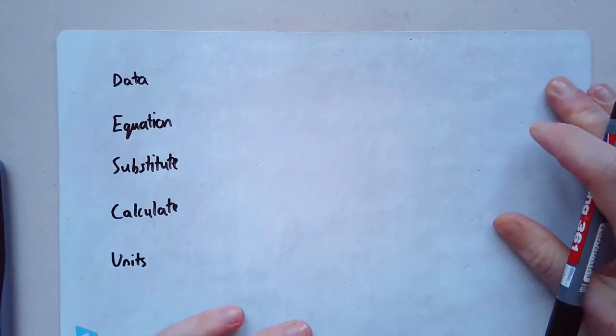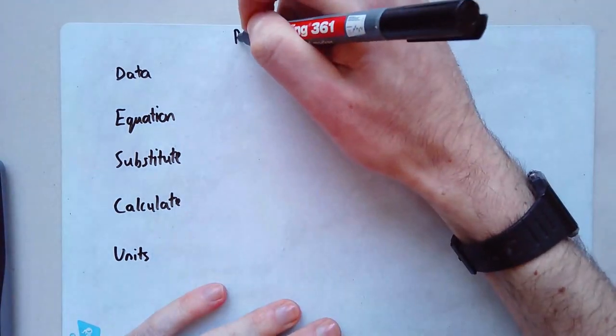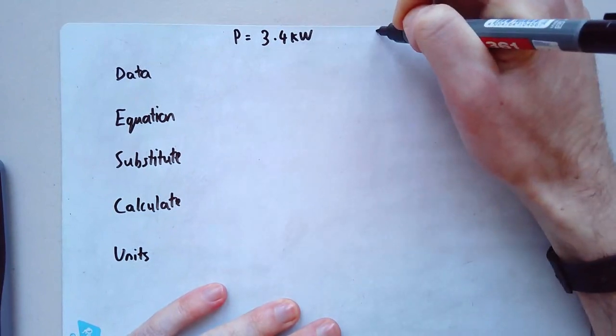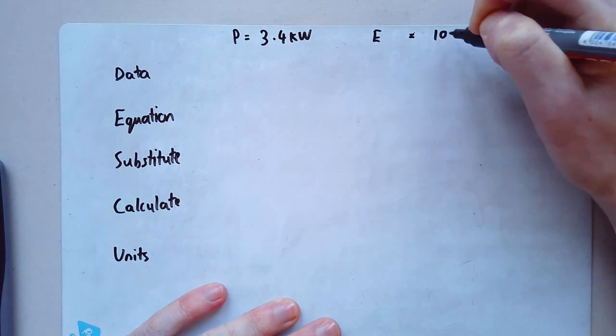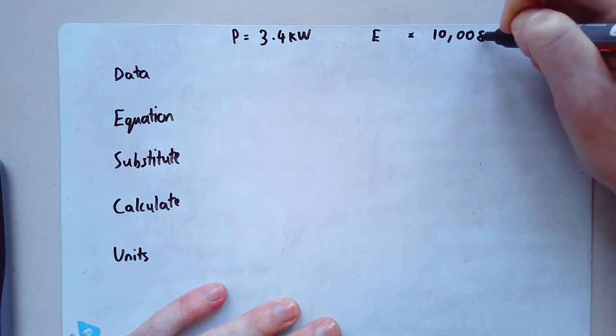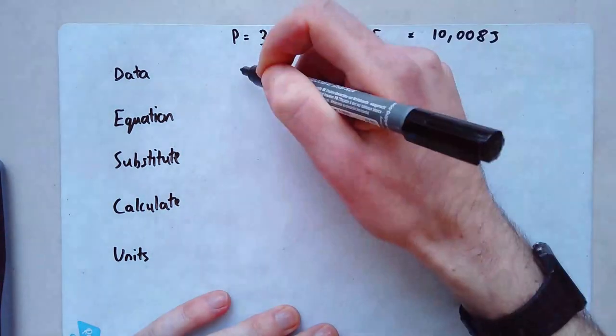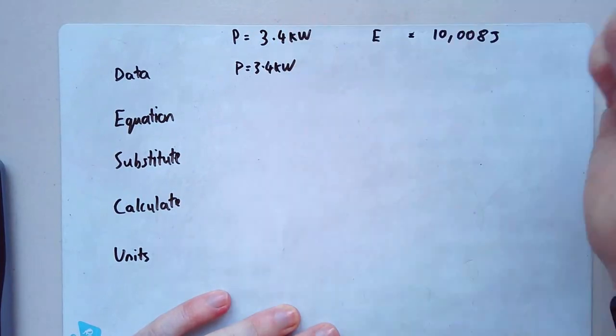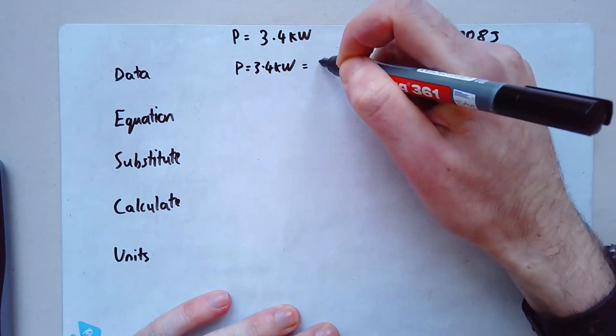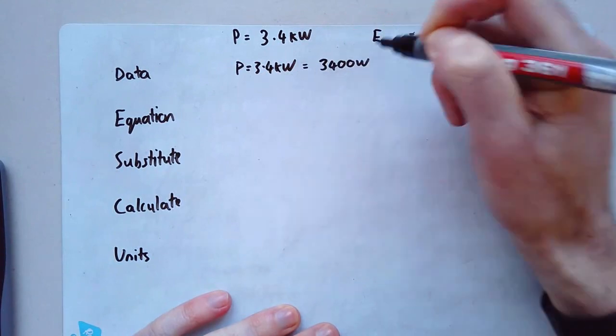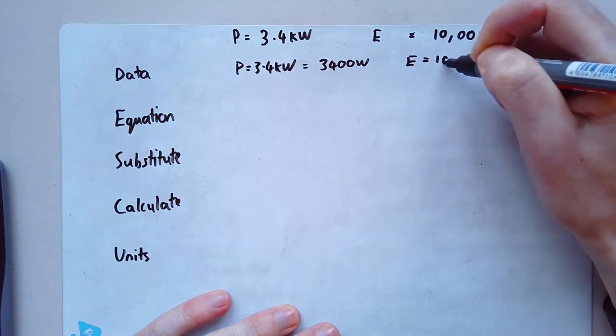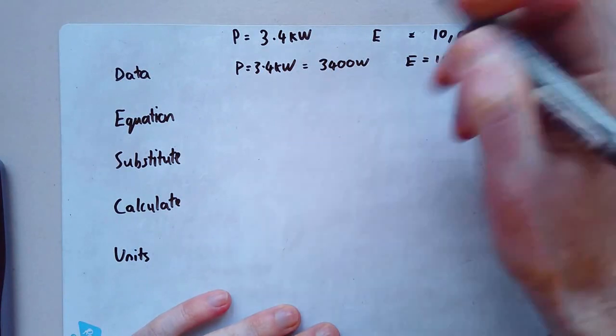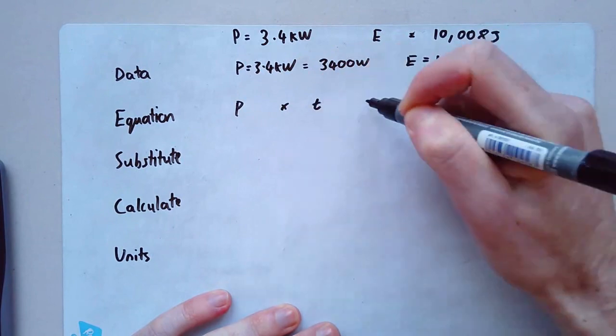Okay, final example. Let's say I've got a P equals 3.4 kilowatts and I've got an E equals 10,008 joules. Data. Well, that's essentially what I just wrote. So I'll just write P equals 3.4 kilowatts. Now kilowatts is no good. I need to change that into watts. So that would be 3,400 watts. And my E equals 10,008 joules. Equation P times t equals E.